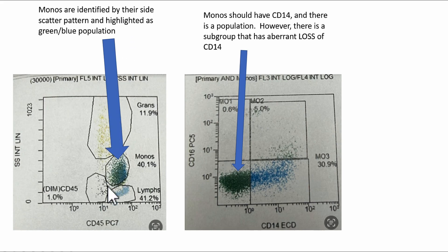So monos are identified here. And there's two different populations of monos as highlighted by the blue data points and the green data points. And monos should have CD14, which is highlighted by this blue data point population. But in the green, there's loss of CD14. So in this monocyte subpopulation, there's aberrant loss.